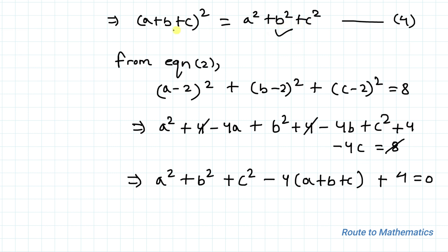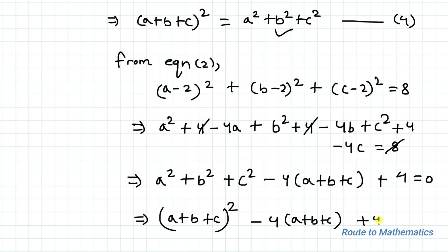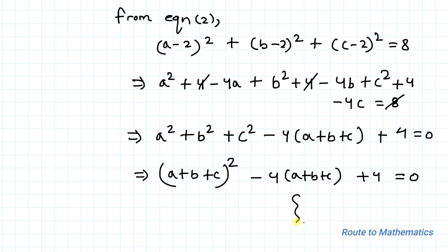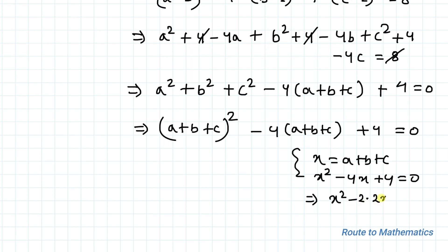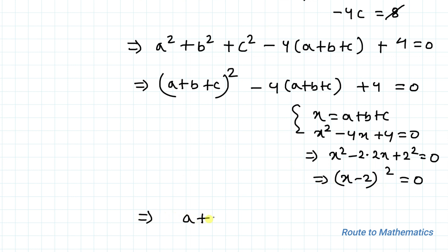From equation 4, a squared plus b squared plus c squared equals (a plus b plus c) squared. Substituting: (a plus b plus c) squared minus 4(a plus b plus c) plus 4 equals 0. Letting x equal a plus b plus c, this becomes x squared minus 4x plus 4 equals 0, which factors as (x minus 2) squared equals 0.